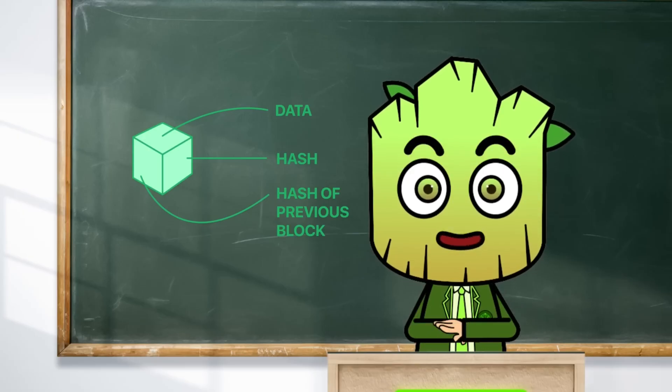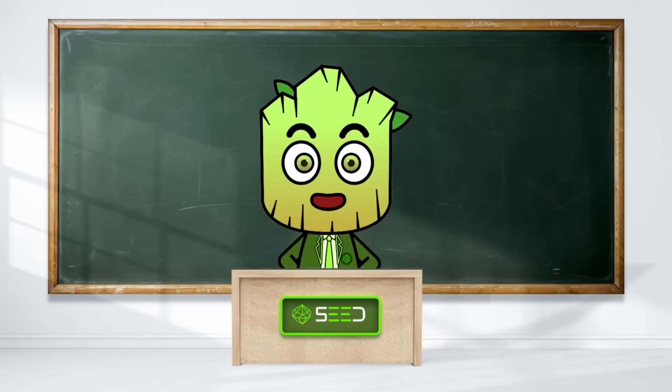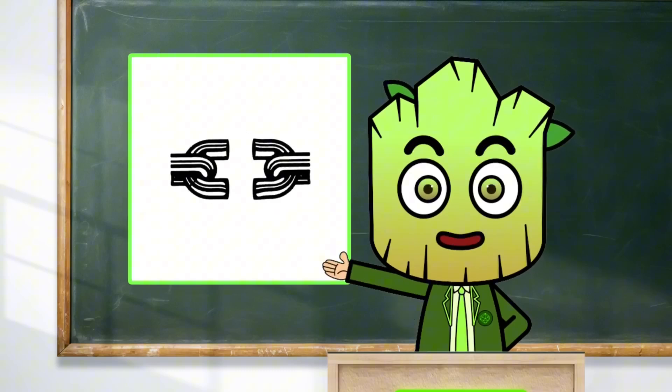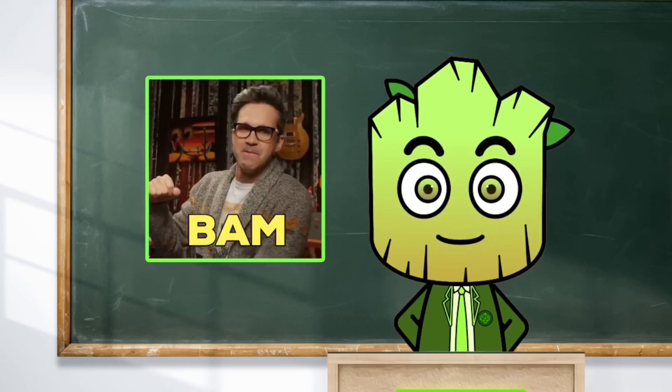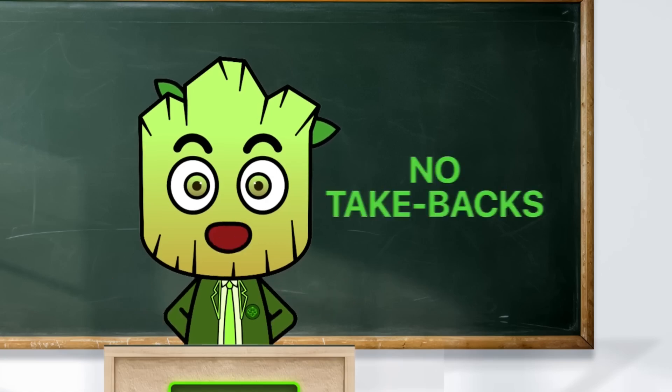Additionally, each block stores the hash of the previous block, and this makes them a complete chain. Once you add something to this chain, you cannot change it. It gets added to the chain, and bam! It's stuck there forever. It's like writing with a permanent marker. No take-backs.